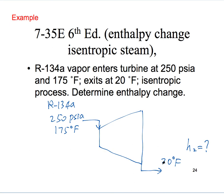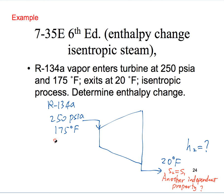Since we know the refrigerant goes through an isentropic process in the turbine — that's the clue — we use that information to get another independent property at the outlet. Isentropic tells us the entropy does not change, so the entropy at the outlet S2 must equal the entropy at the inlet S1.